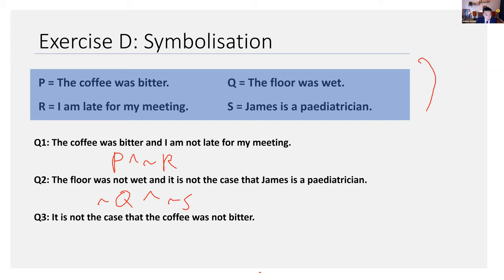So number three. It is not the case that coffee was not bitter. There are two nots. What's the answer? Can somebody tell me? Somebody said double negative. They cancel each other out. That is indeed true. So the coffee was bitter. It's P. You can actually say P, or you can say not not P. These are logically equivalent. So if you said either of these things, you would have got it correct.